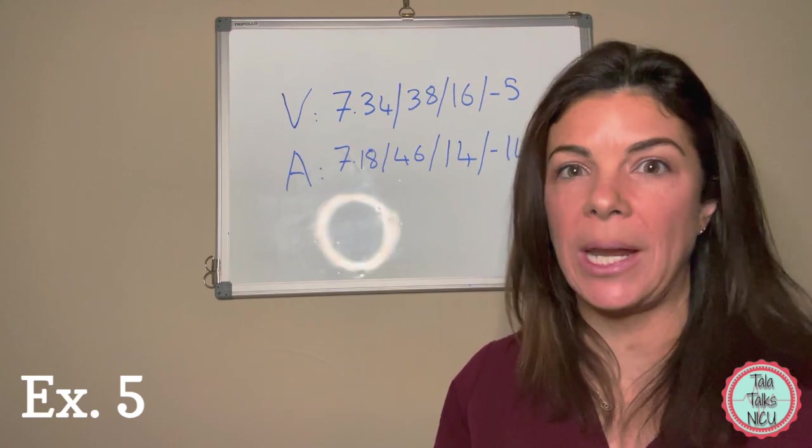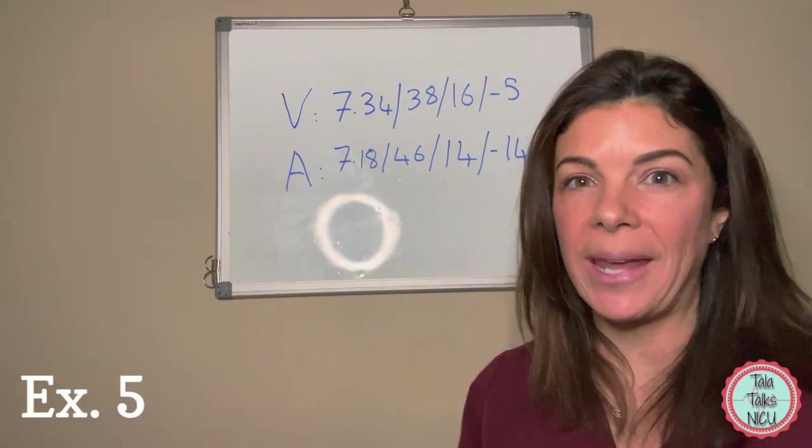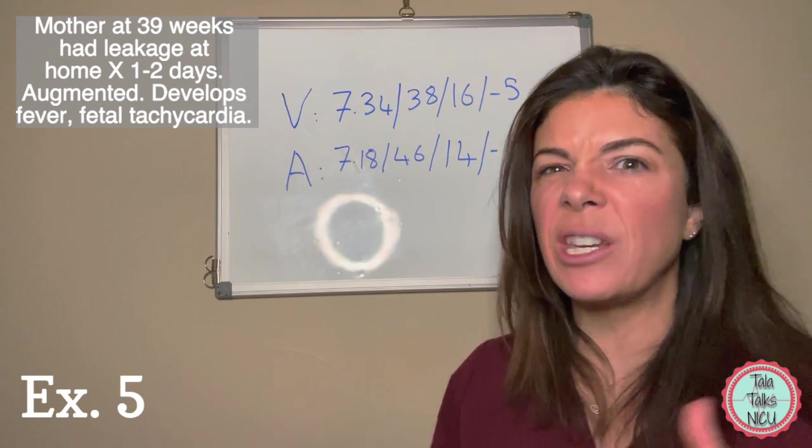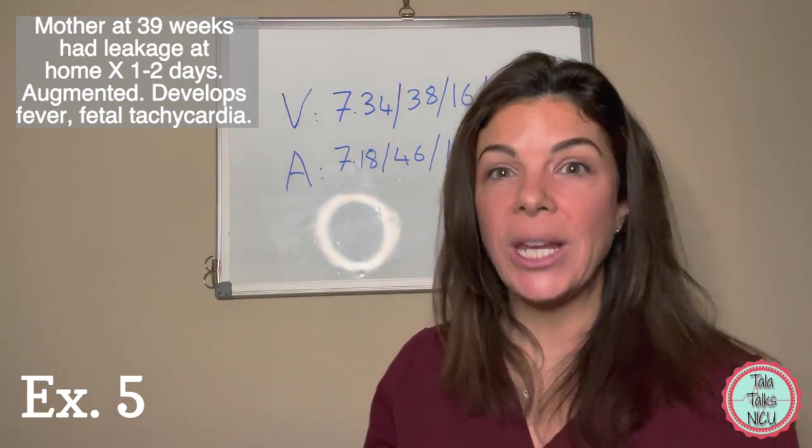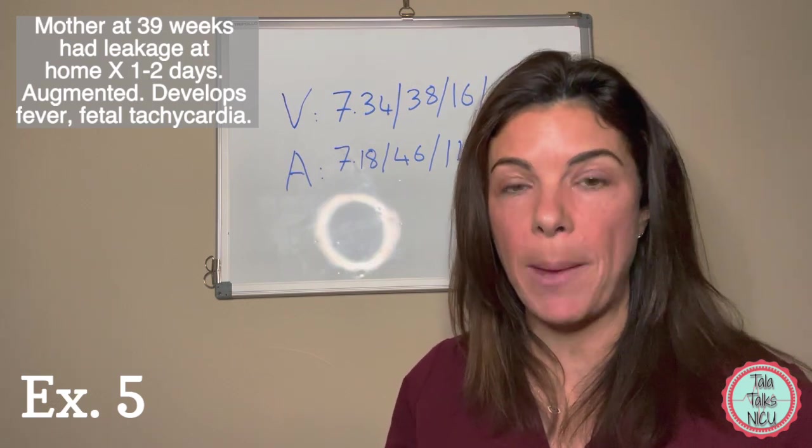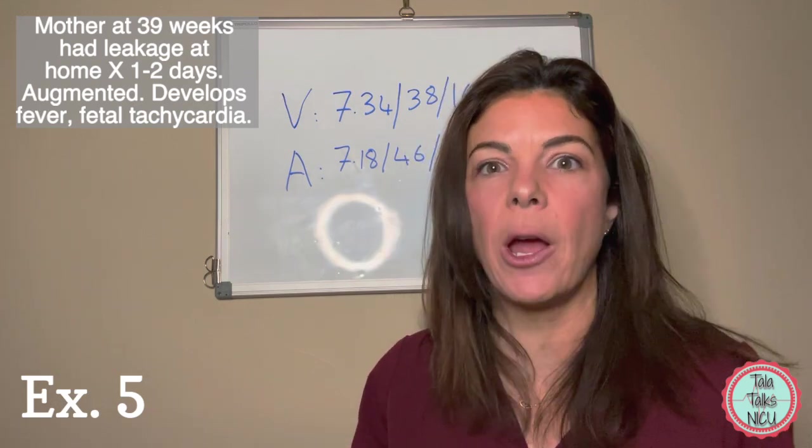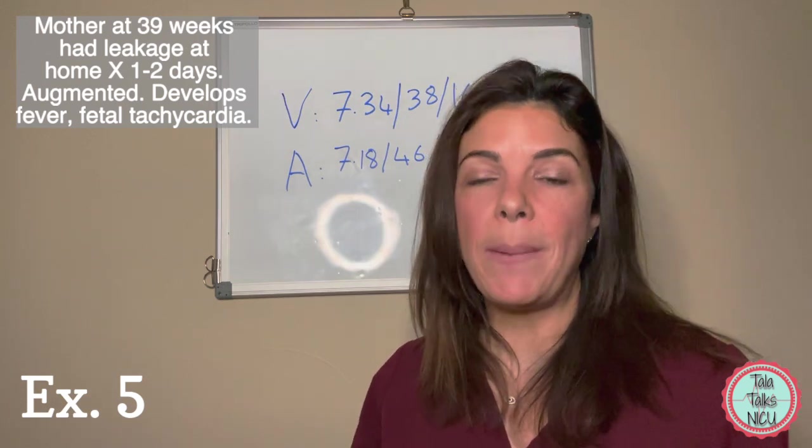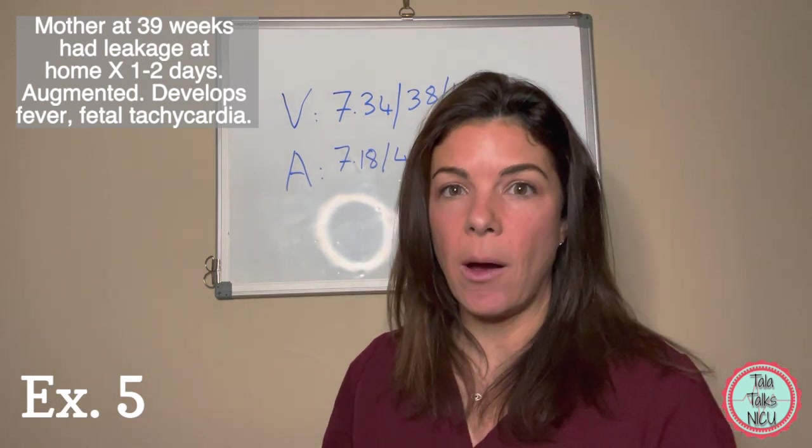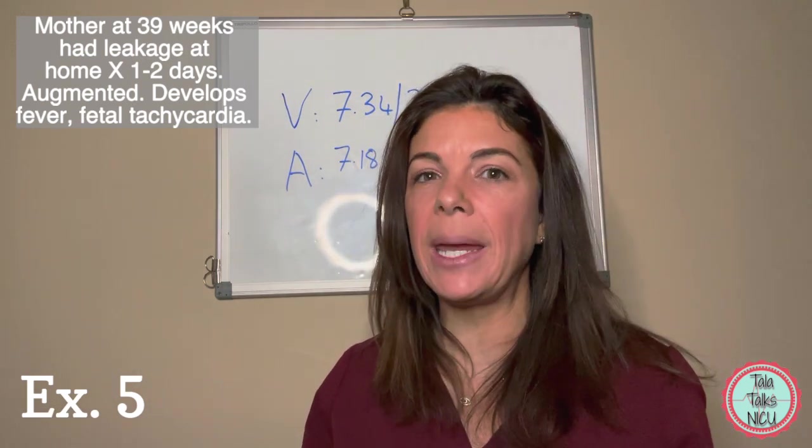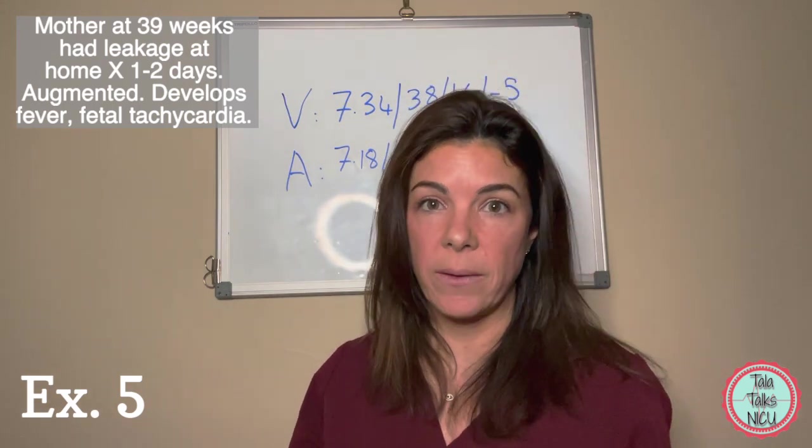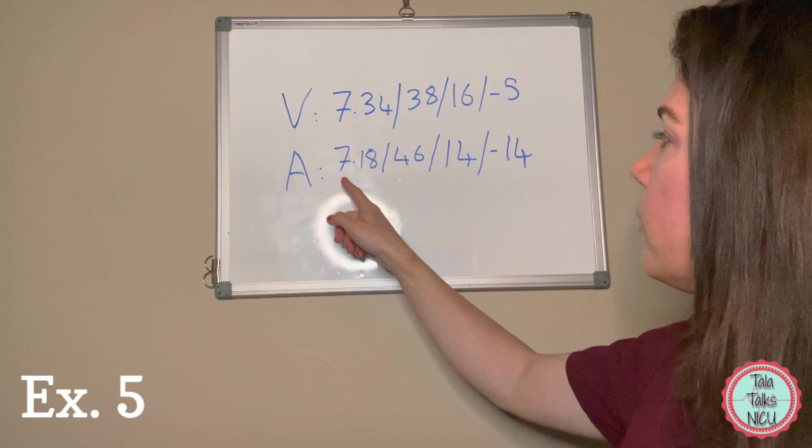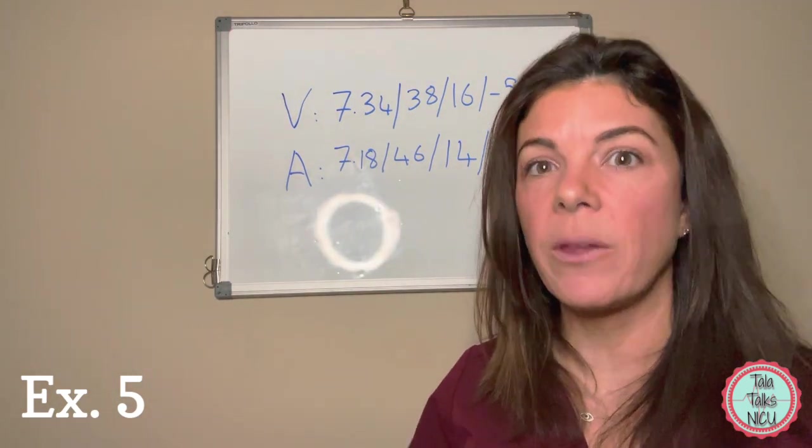That is a really important lesson for you all to realize: if there is a complete cord occlusion, then the blood isn't going to the baby and the blood isn't coming back from the baby, so the cord blood gases do not reflect what's happening in the fetus. Don't always feel reassured by getting okay-ish cord blood gases. Our last example, example number 5, is also another really important concept that you have to understand from cord blood gases. Again, I'm going to give you a little bit of history. A full-term mother comes in and she reports that she's been leaking a little bit of fluid for a couple of days.